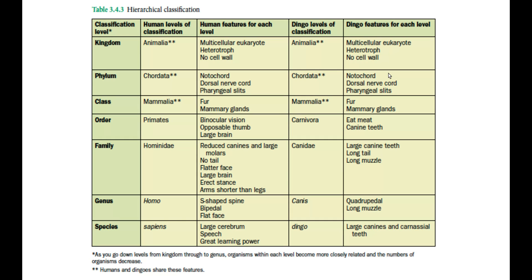We fall under class Mammalia, so we have a fine layer of fur over our body and mammary glands are present, which are used to help feed the young. We come under the order Primates — we have binocular vision, seeing with two eyes, an opposable thumb that can move across the whole span of our palm to help us pick things up, and a large brain. The family Hominidae means all organisms in this group have reduced canines and larger molars, no tail, a flatter face, a larger brain, an erect stance, and arms shorter than their legs.